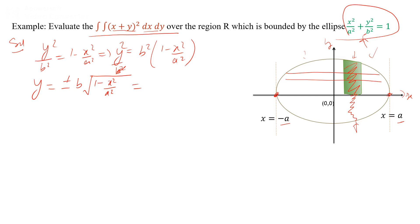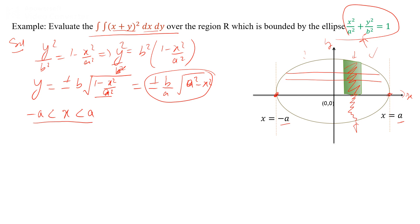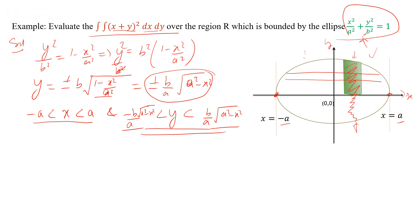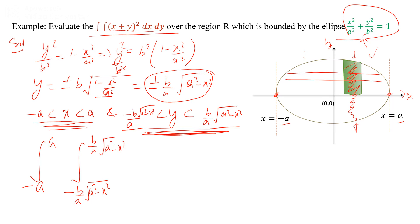We can also write this as (b/a) times root(a squared minus x squared). So x varies from minus a to a, and y varies from minus b/a times root(a squared minus x squared) to plus b/a times root(a squared minus x squared). These are the limits of integration, integrating first with respect to y then x, with integrand (x plus y) whole square dy dx.